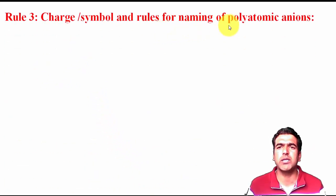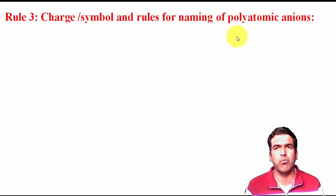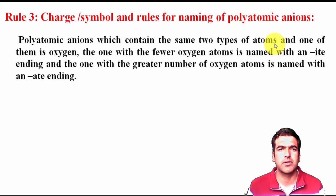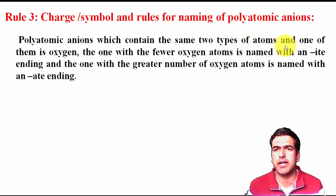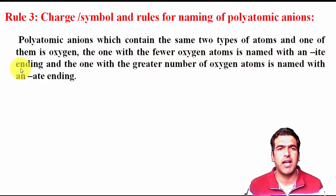Next rule: polyatomic anions, which are comprised of more than one atom covalently bonded to each other and behave as a single entity. The rule is: for polyatomic anions containing the same two types of atoms, one of which is oxygen, the one with fewer oxygen atoms is named with an '-ite' ending, and the one with a greater number of oxygen atoms is named with an '-ate' ending.